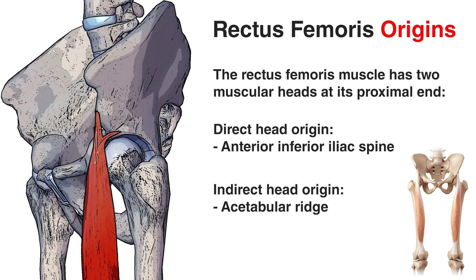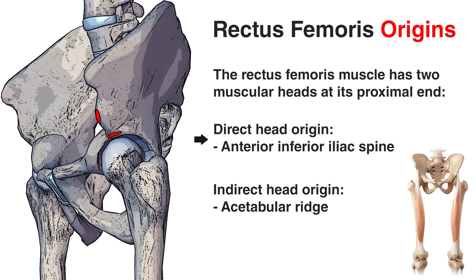Looking at the origins of the rectus femoris, it has two heads of origin. The first is called the direct head and the second is called the indirect head. The direct head originates from the anterior aspect of the inferior iliac spine — the anterior inferior iliac spine — while the bony prominence above it is the anterior superior iliac spine. The indirect head originates from the acetabular ridge, which is the ridge running around the acetabulum — the socket in which the head of the femur sits.